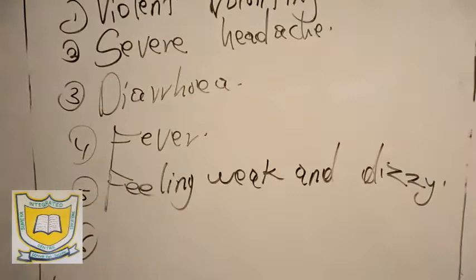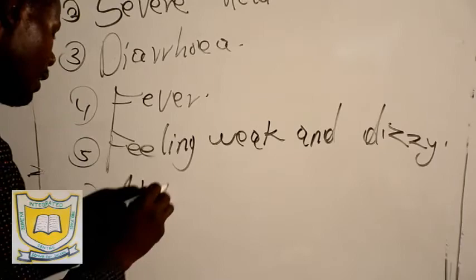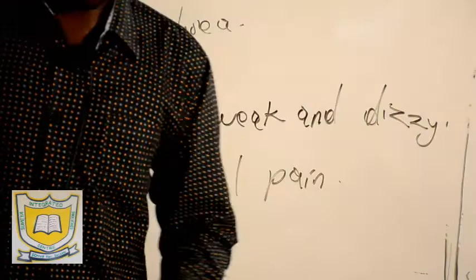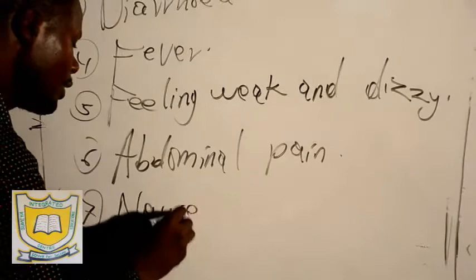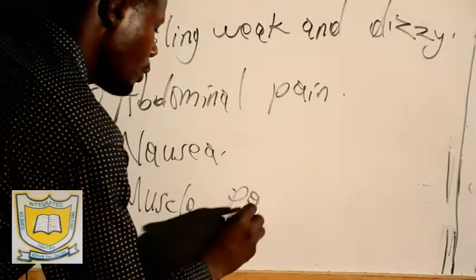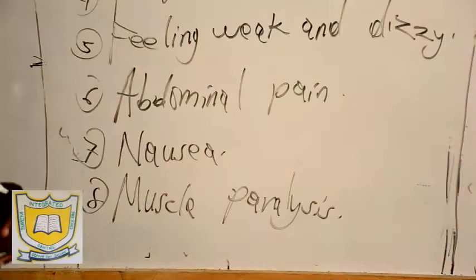We have feeling weak and dizzy. Number six, we have abdominal pain — severe abdominal pain, because the stomach has been affected. Then we have feeling nausea, and then we have muscle paralysis. And then lastly, constipation. Constipation is also another sign of food poisoning.